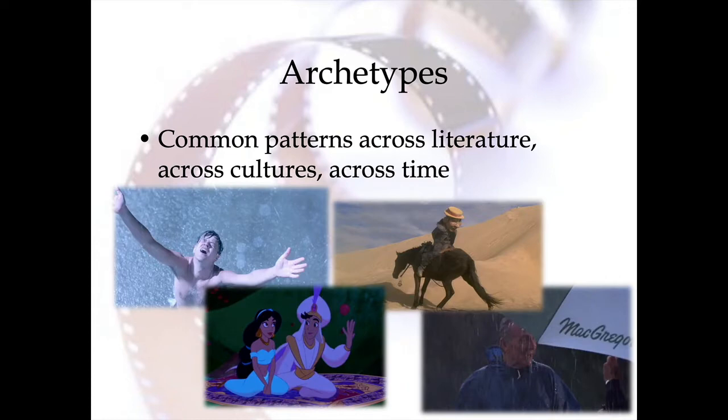We can also examine archetypes at the literary level — those common patterns that show up in literature across cultures, across time, across genres. Things like water, which as a symbol often stands for destruction but also rebirth. Temptation can be wrapped up in the symbol of an apple. Different geographies can help set the tone for the story. We have archetypes in literature across culture, setting, and genre, and we're going to see that those rules still apply in the film world as well.